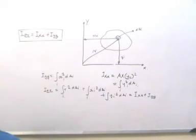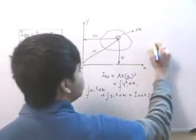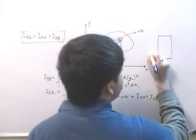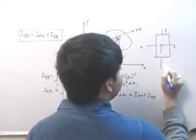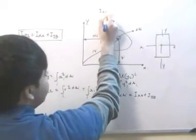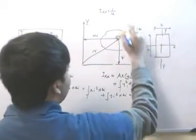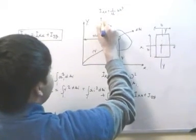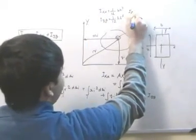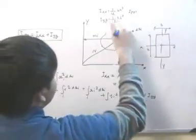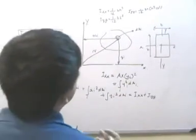This perpendicular axis theorem is what we use to find the polar moment of inertia, and Izz is that polar moment of inertia. For example, for a rectangular cross-section with width b and height h, Ixx equals (1/12) bh³ and Iyy equals (1/12) hb³. So the polar moment of inertia Izz equals (1/12) bh times (h² plus b²).